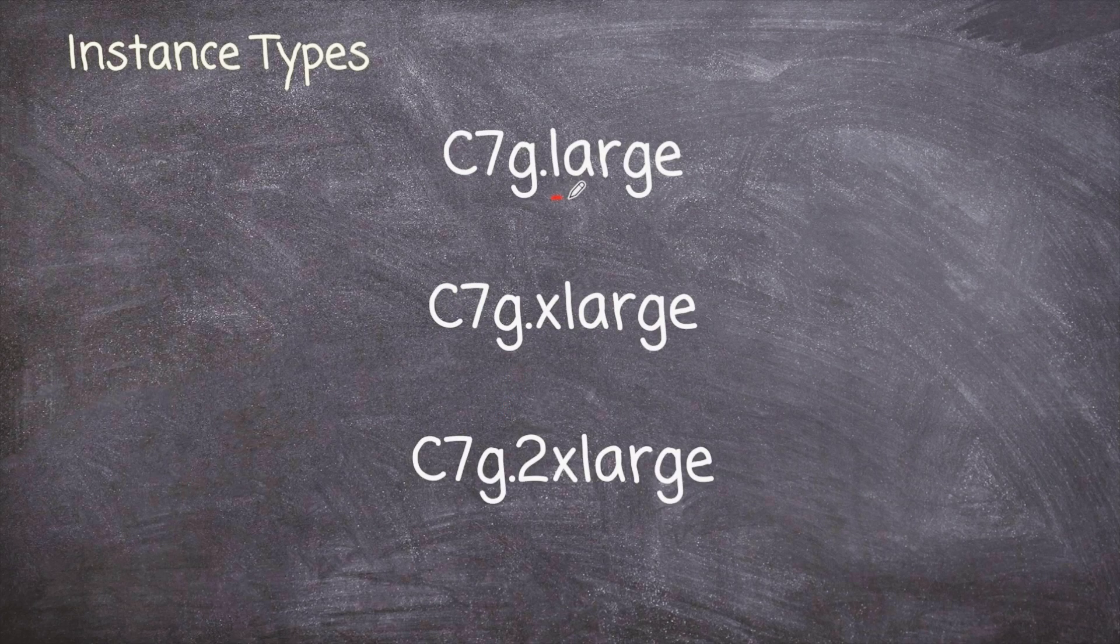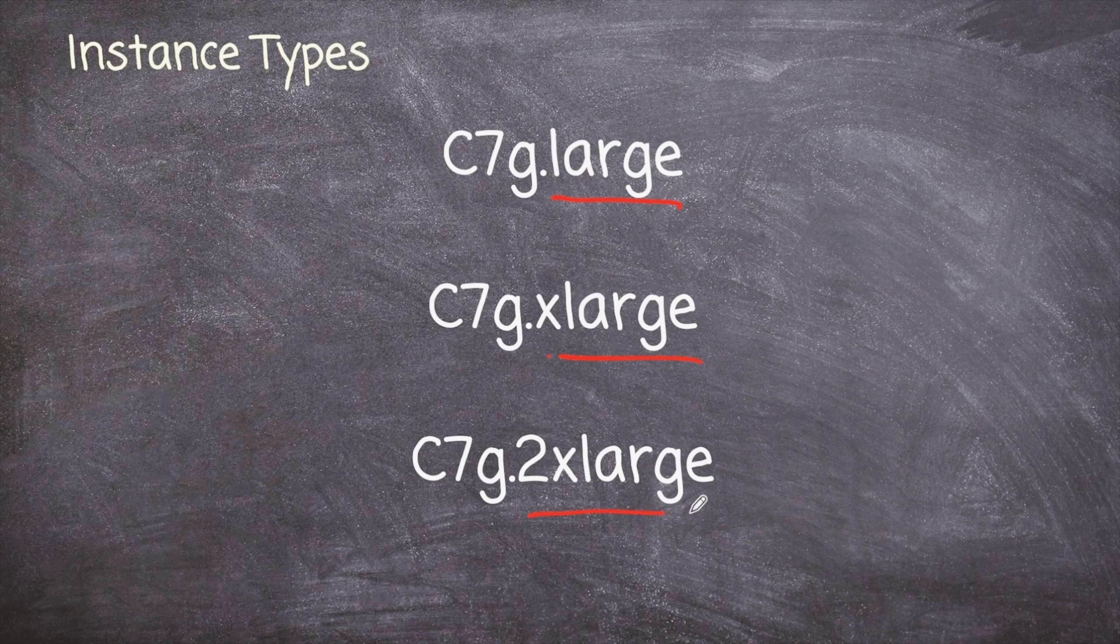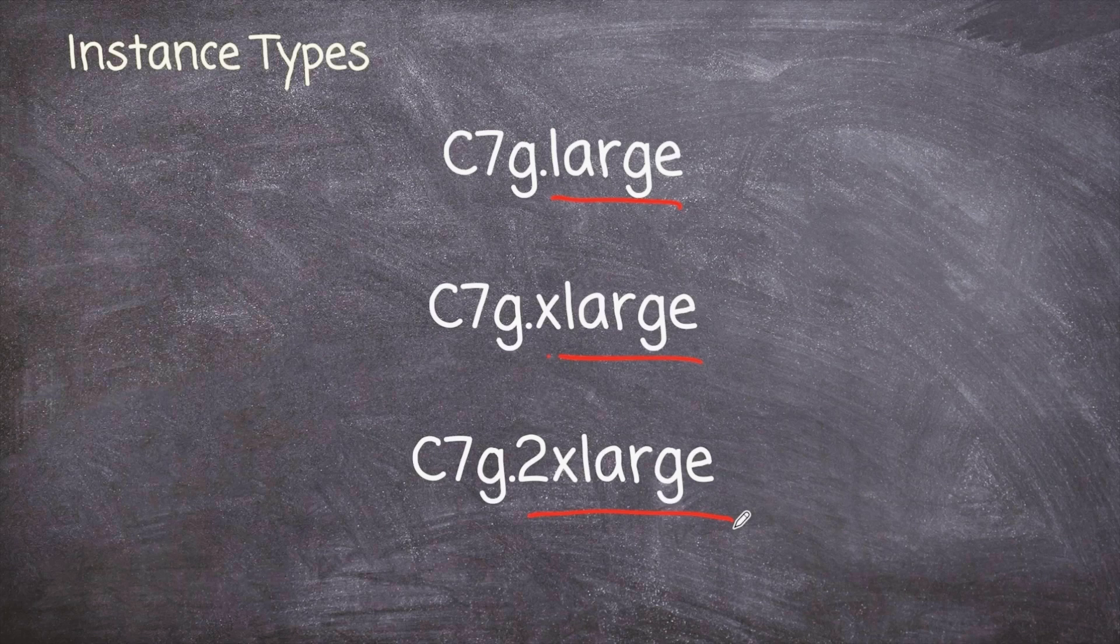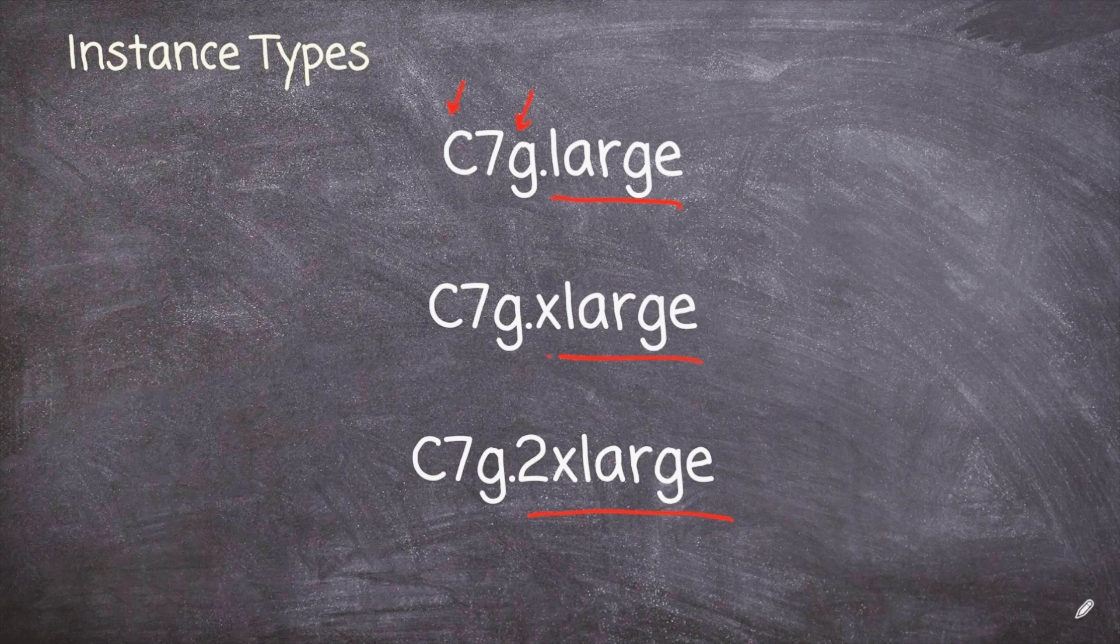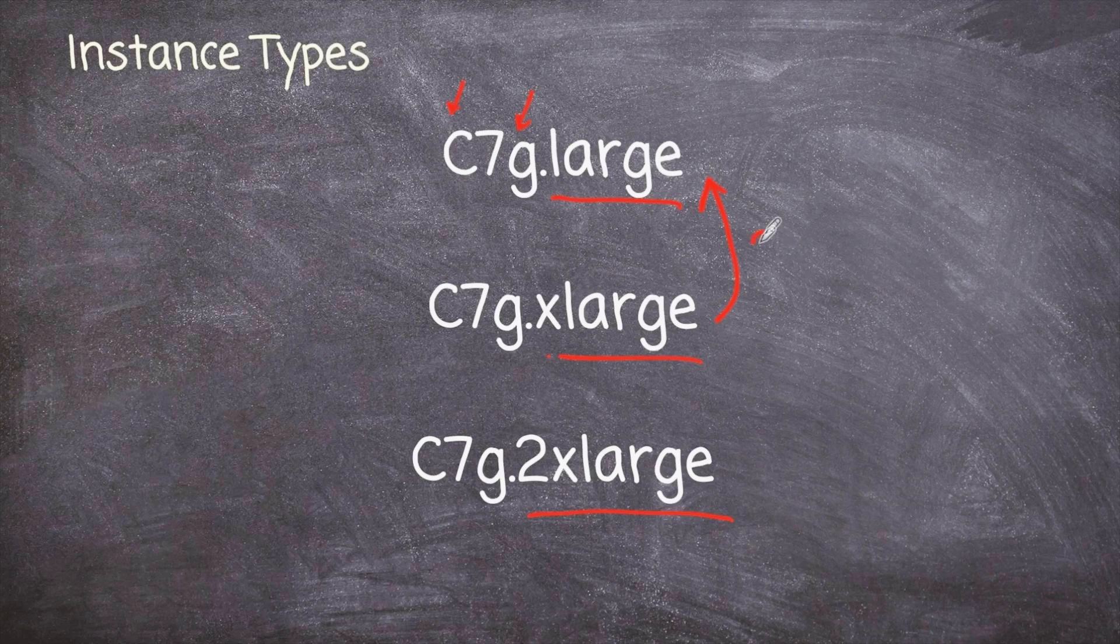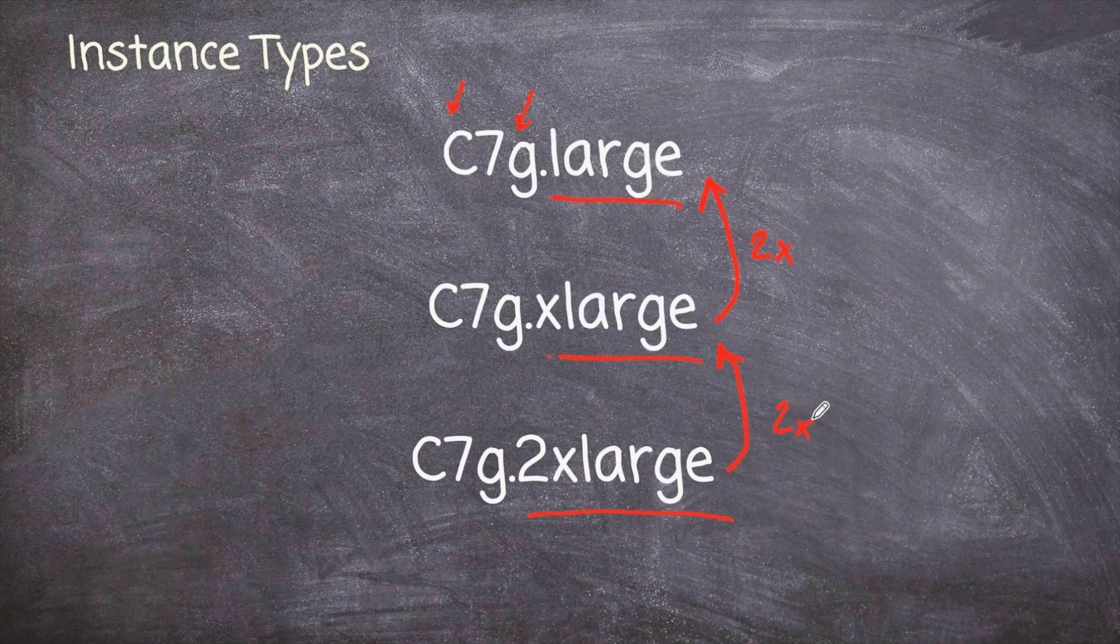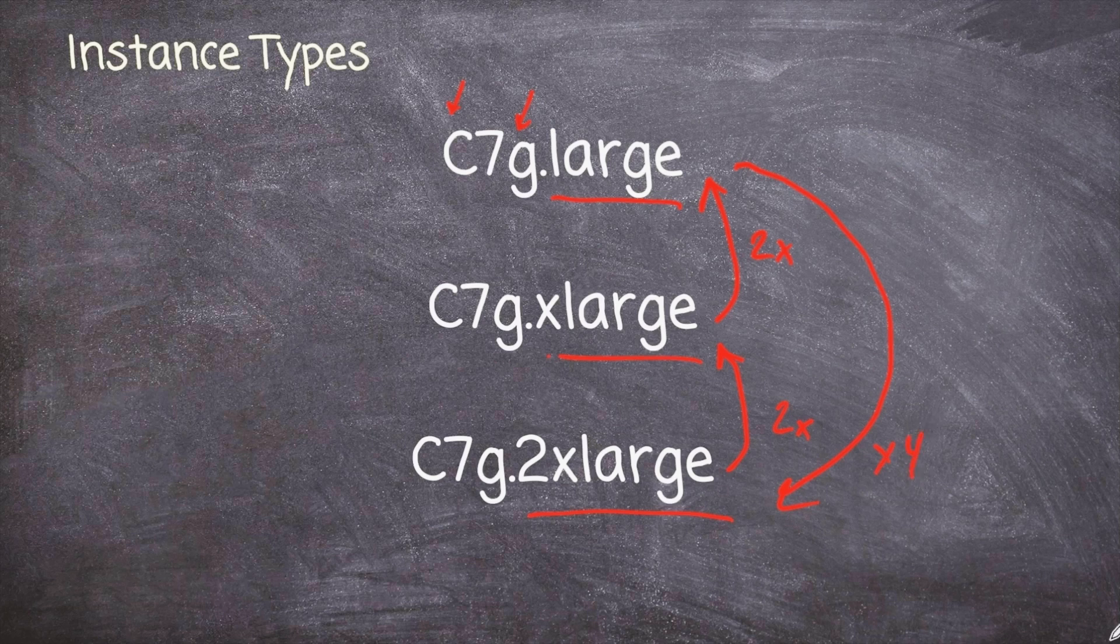Now here's another dimension we can look at. We have large, we have xlarge, and we have 2xlarge. They go all the way up to 4x, 8x, 12x for some families. This tells me it's a compute optimized. This is the seventh generation of the compute optimized, and we're using a Graviton processor in this instance. Generally speaking, an xlarge is going to be two times a large, and a 2xlarge is going to be two times an xlarge. So you could also say that this large right here is going to be four times as large as the dot large.